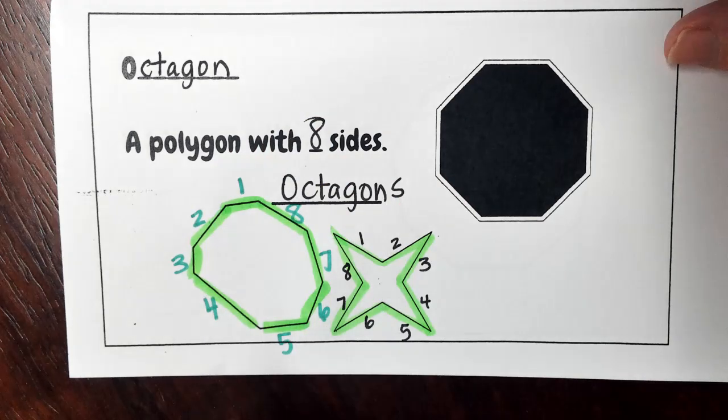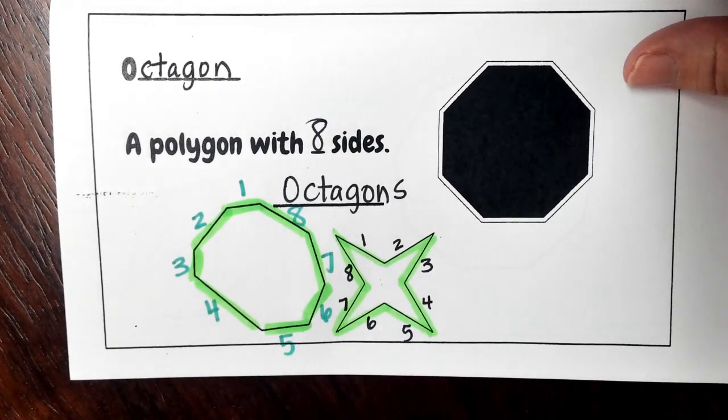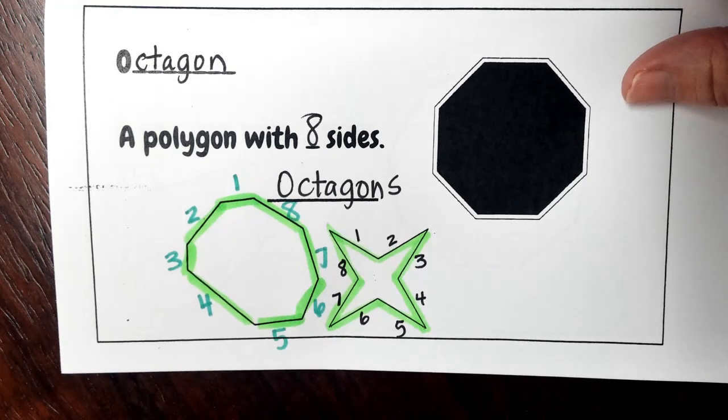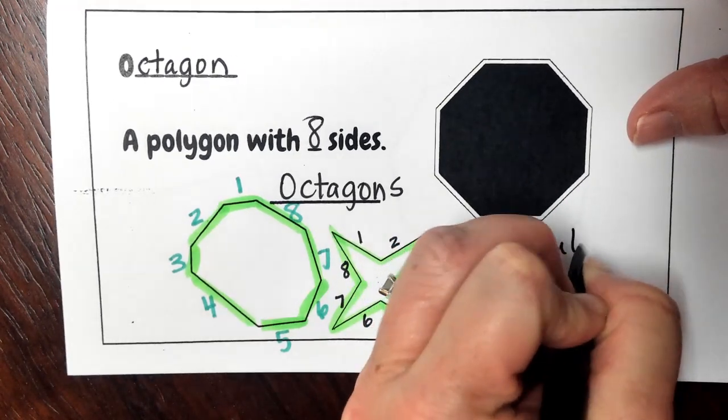This figure right here, what kind of octagon do you think this would be? That's right. It's going to be called our regular octagon, and this is like your stop sign.